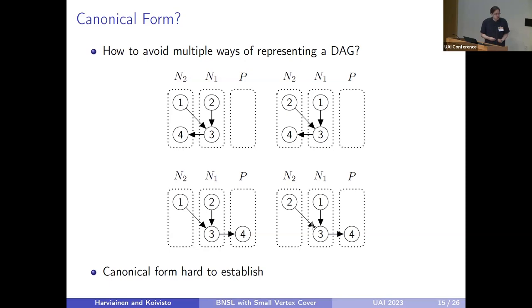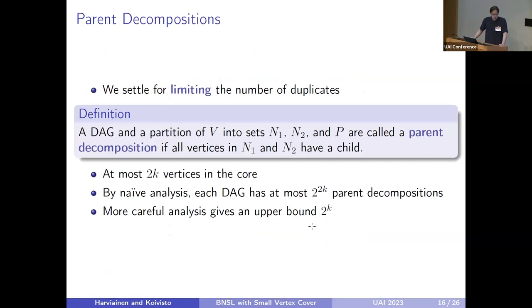Then about sampling. Sampling is much harder than optimization because there's the issue of duplicate counting in the sense that there are multiple ways of representing the same DAG. For example, this DAG can be represented in four possible ways. We would like to establish some sort of canonical form for each DAG that is easy to sum over. Because defining such a canonical form is a bit hard, we settle for limiting the number of duplicates we count and then fix this issue later.